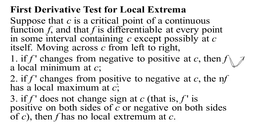On the other hand, if f prime is initially positive and then after point c it becomes negative, then right at c there's a critical point — either the derivative is undefined or zero. The function might be level or have a corner, but since it's continuous, you've got a maximum there.